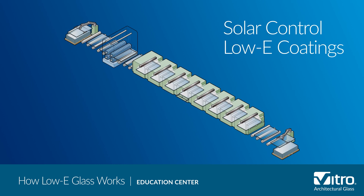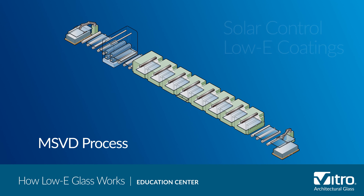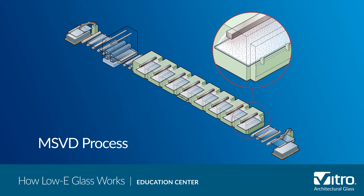Most solar low-e coatings are manufactured using the magnetron-sputtered vacuum deposition, or MSVD, process. The coating is applied offline to pre-cut glass in a vacuum chamber at room temperature. This coating, sometimes referred to as a soft coat, needs to be sealed in an insulated glass or laminated unit and has lower emissivity and superior solar control. The best performing solar control coatings are MSVD and they are ideal for mild to hot climates dominated by air conditioning use.